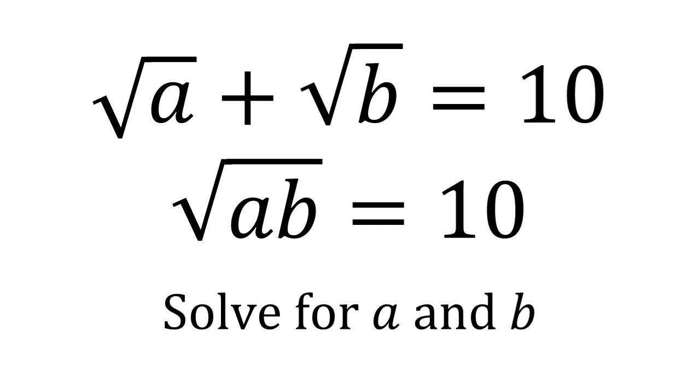We've been given that the square root of a plus the square root of b is equal to 10, and the square root of ab is also equal to 10. We need to solve this for a and b.